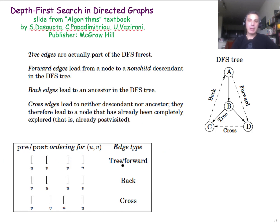Now that we are more familiar with the pre- and post-numbers of the DFS process, let's actually use them to classify the edges of a directed network. So if you have a directed network, you can classify the edges in four types. There are edges that are part of the DFS tree, like these three edges here.